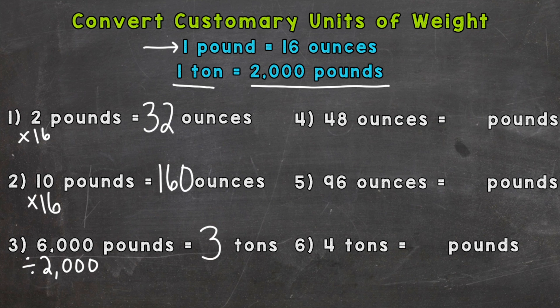Number four: 48 ounces equals how many pounds. Well we know 16 ounces equals 1 pound, so we are going to have to split that 48 ounces into groups of 16, and each of those groups of 16 equals one pound.